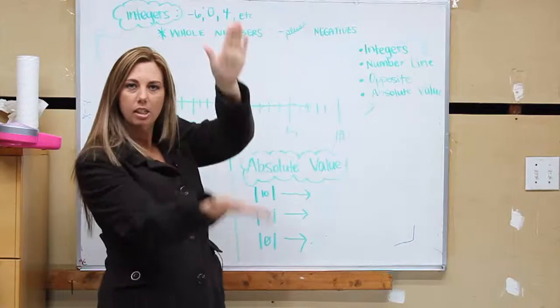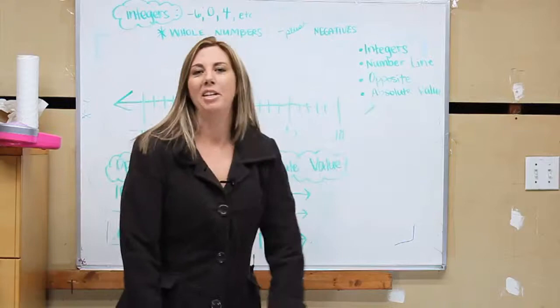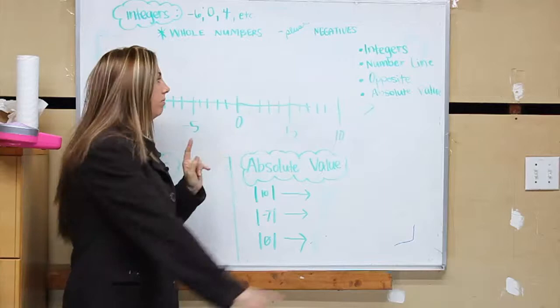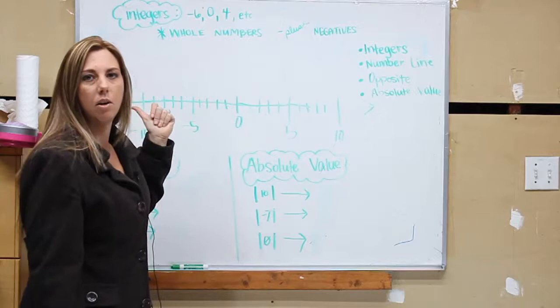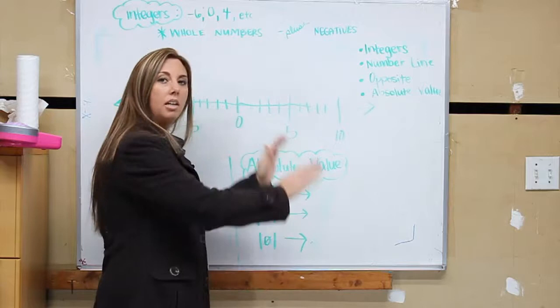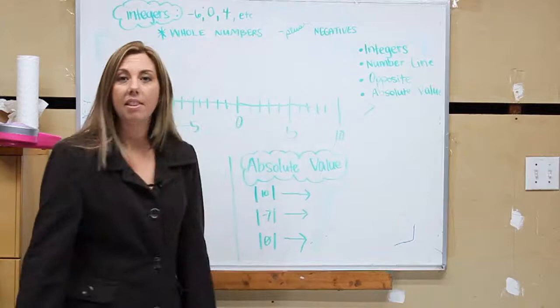Now let's talk about the number line. This is what a number line looks like: right in the middle is zero, to the right are all your positives, to the left are all your negatives. Pretty basic idea. One, two, three, four, five. The other way is negative one, negative two, negative three, negative four, negative five. This is what a number line looks like - it goes both directions, infinitely.